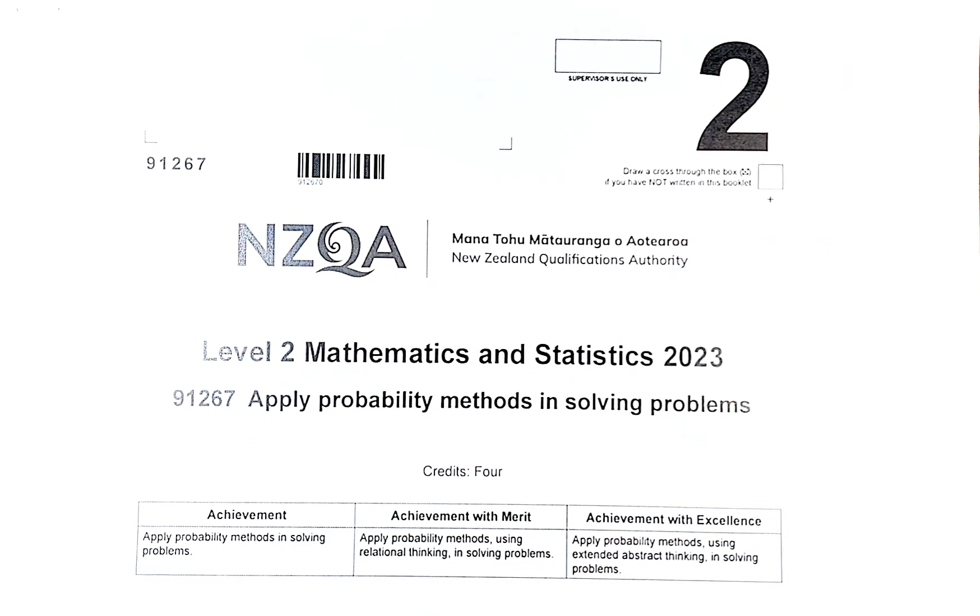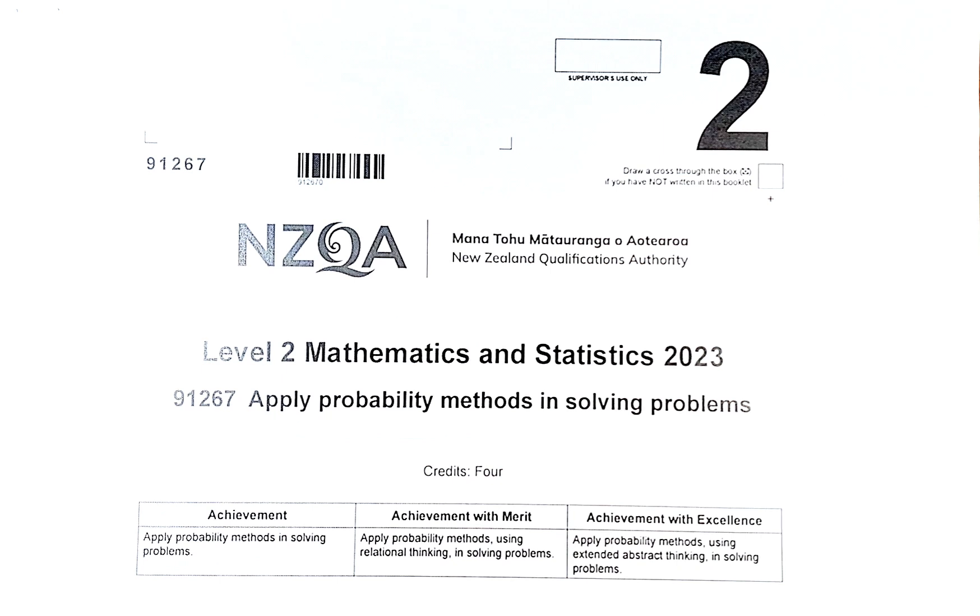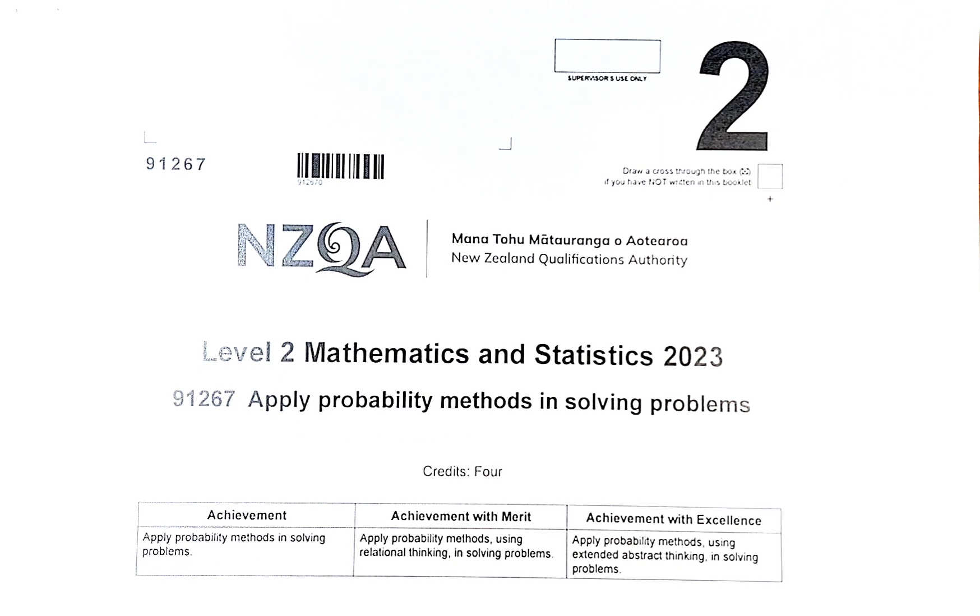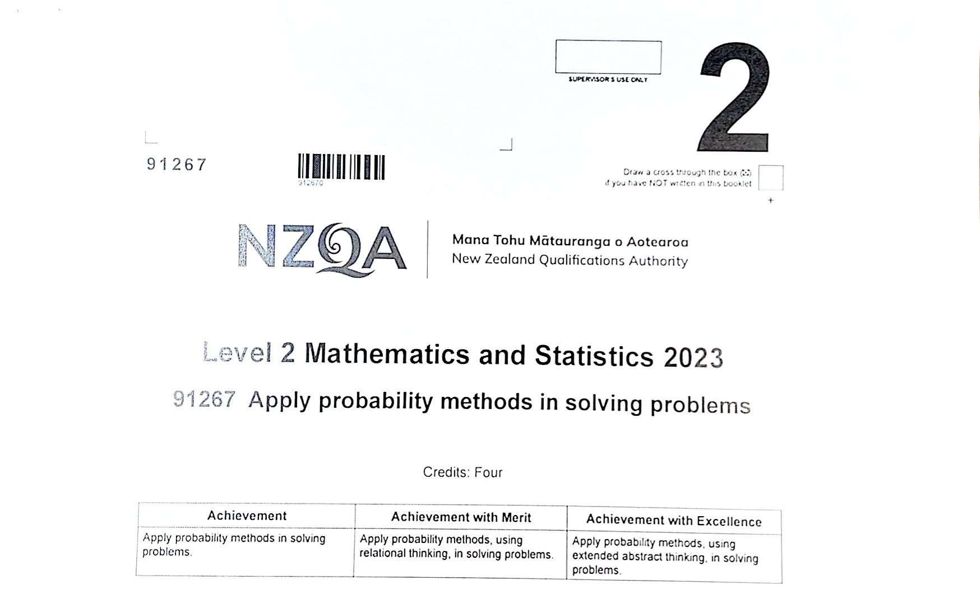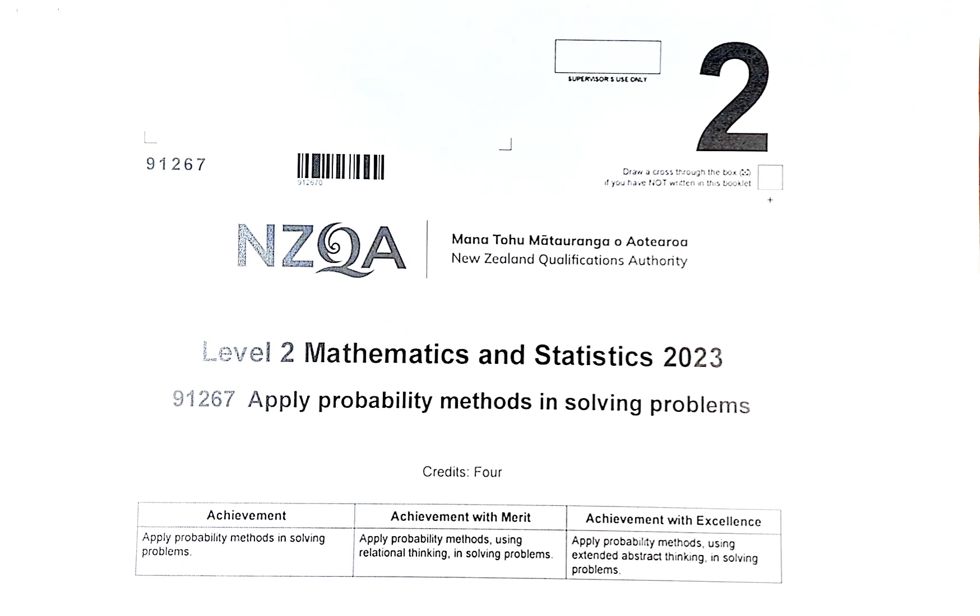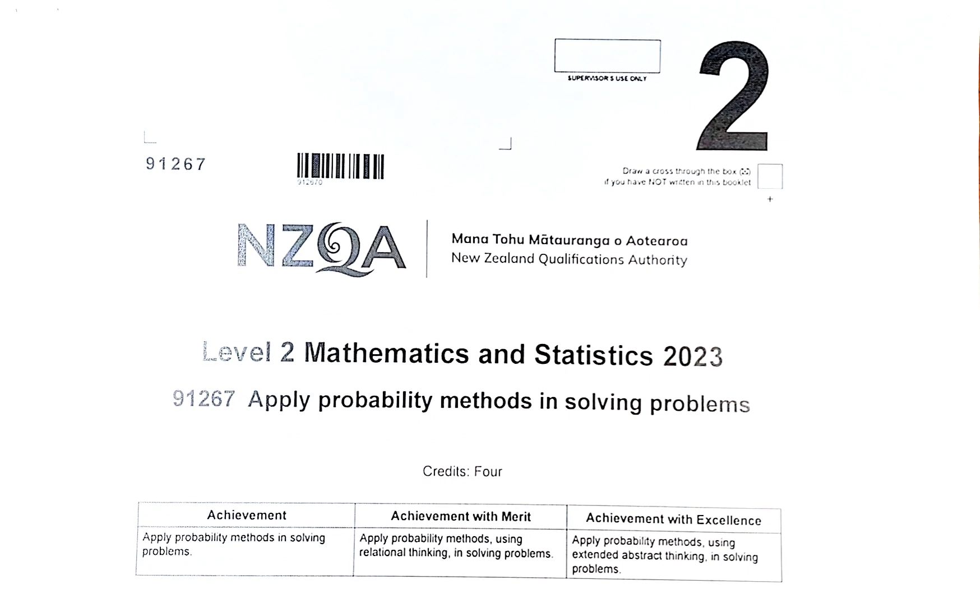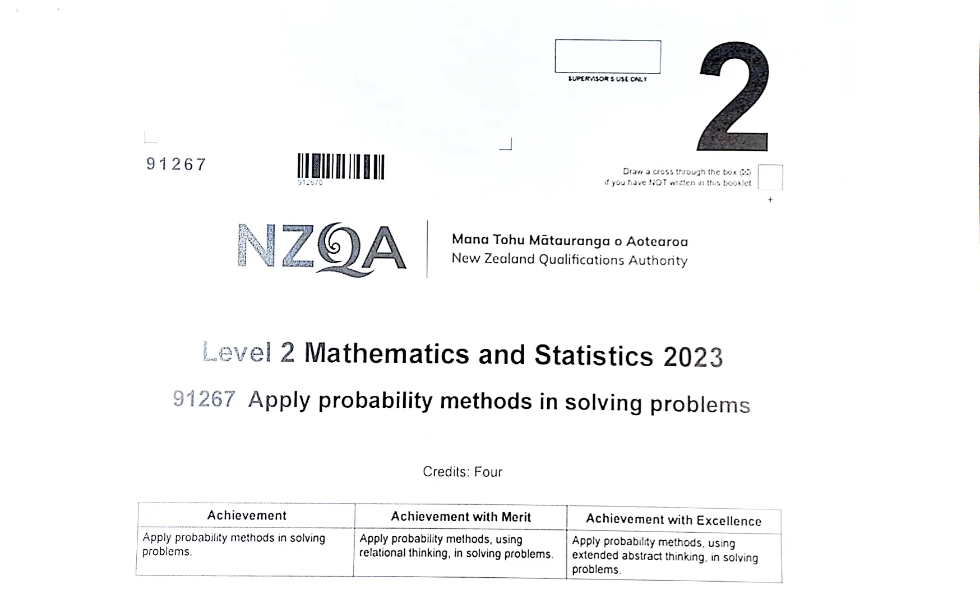Good day and welcome to video number 16, the last video of the 2023 NCEA Level 2 Statistics Paper called Applied Probability Methods in Solving Problems. In this video, we are going to solve question 3C part 1 and part 2. If you only get part of the question right, then you will be achieved. So without further ado, let's try to solve this question.